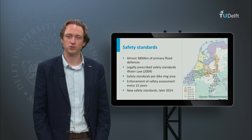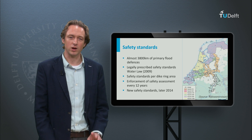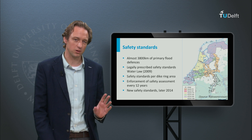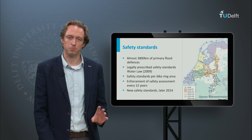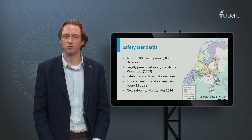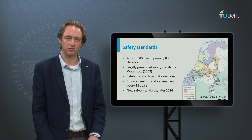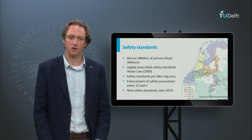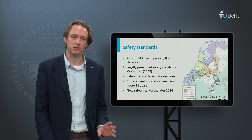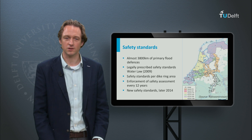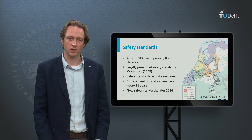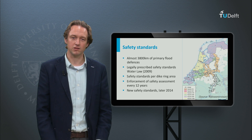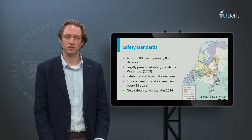In recent years, new approaches have been developed to estimate failure probabilities for all the different failure mechanisms that we have discussed. The new safety standards in the Netherlands, to be published in autumn 2014, will be expressed as a tolerable probability of failure instead of the previously mentioned probability of exceedance. This change will allow a more complete assessment of the various failure mechanisms and the integral safety of flood defences.